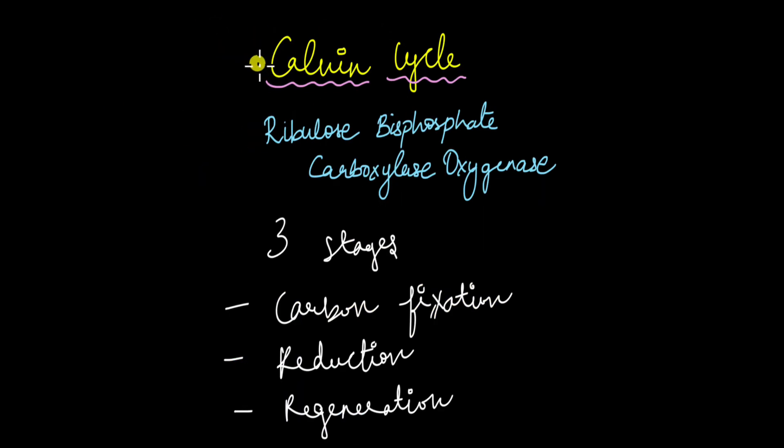The dark reaction actually is a cyclical process that is known as the Calvin cycle. It is named after the scientist who discovered this process, Melvin Calvin. This Calvin cycle takes place in the presence of this enzyme which is very important called ribulose bisphosphate carboxylase oxygenase.